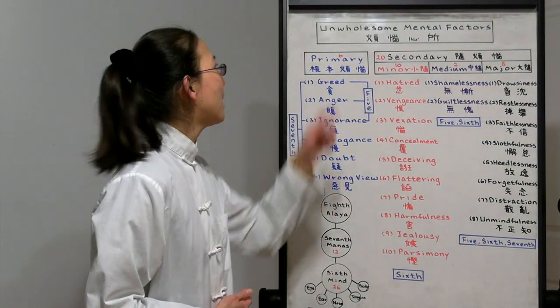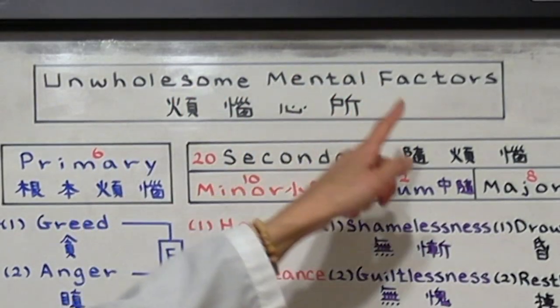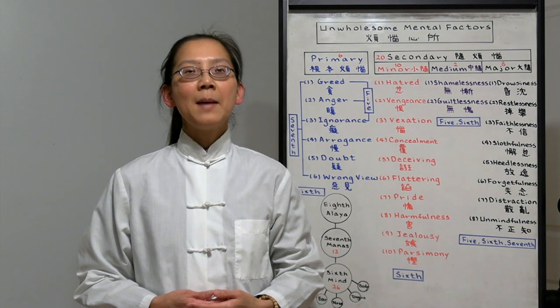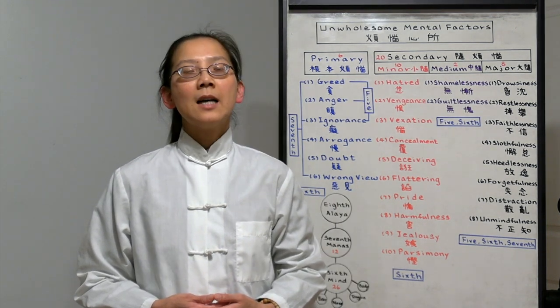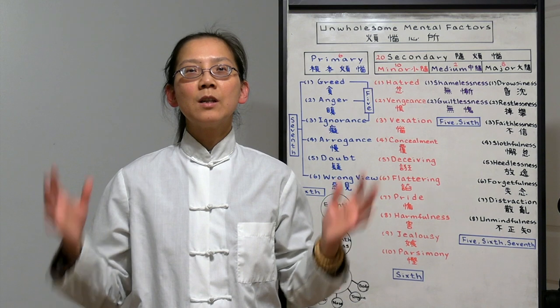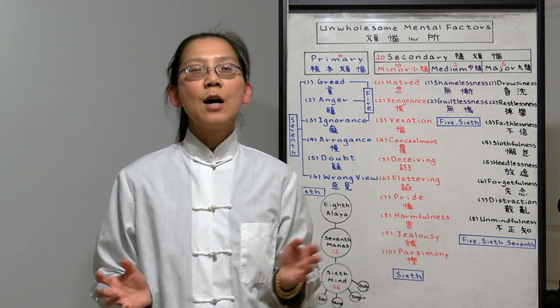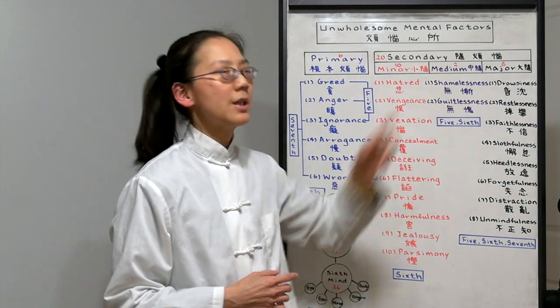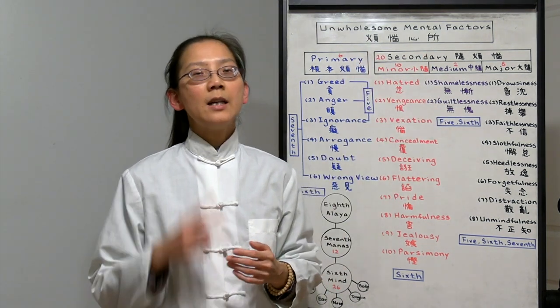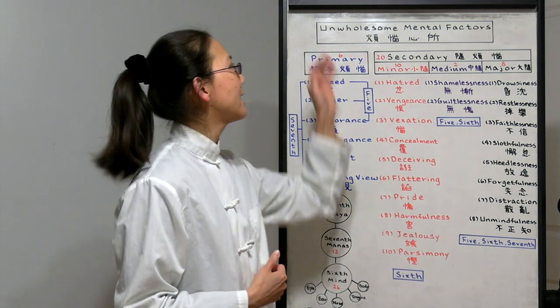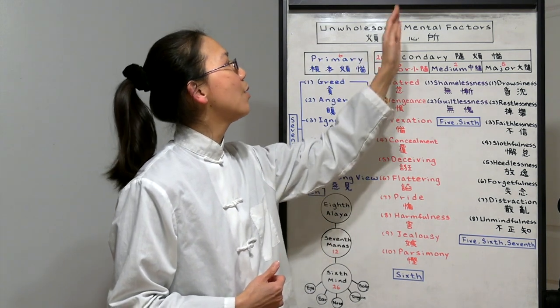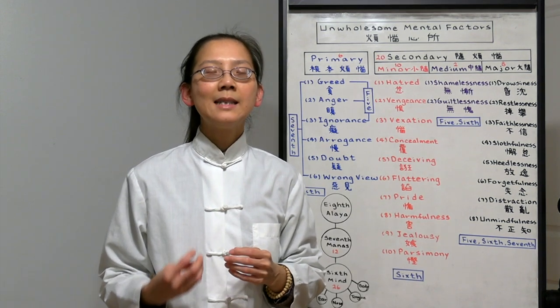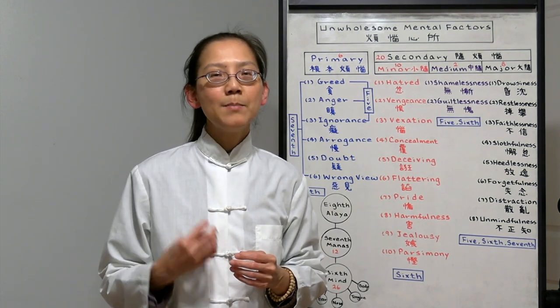Today we are going to talk about unwholesome mental factors. This is from the 100 Dharma Shastra by Bodhisattva Vasubandhu. It talks about everything in terms of 100 Dharma. Out of the 100 Dharma, 51 are mental factors. Out of the 51, there are 26 that are considered unwholesome mental factors. So these are our afflictions. In this class, we will talk about these 26 unwholesome mental factors.